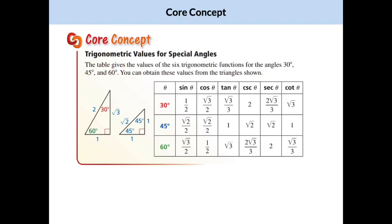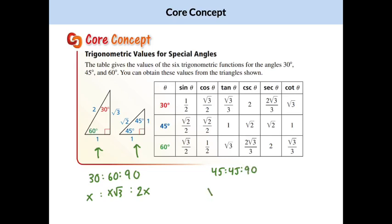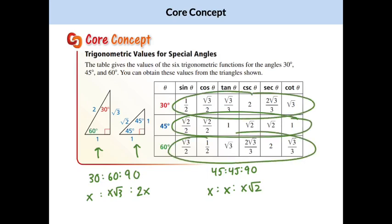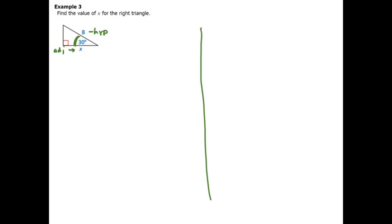This table gives specific values for sine, cosine, tangent, cosecant, secant, and cotangent for the special angles 30°, 45°, and 60°. Remember the relationships: in a 30-60-90 triangle, if the short side is x, the longer side is x√3 and the hypotenuse is 2x. For a 45-45-90 triangle, both legs are equal (x) and the hypotenuse is x√2. The table uses these relationships. For example, cosine deals with adjacent and hypotenuse, so cosine of 30° equals x over 8.